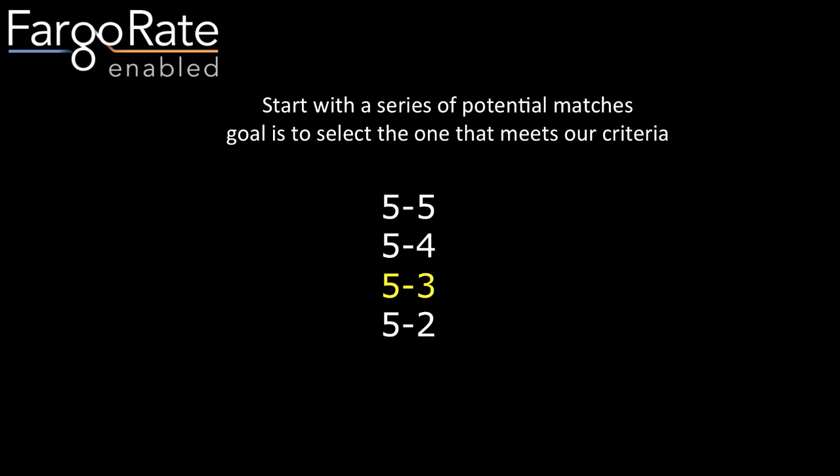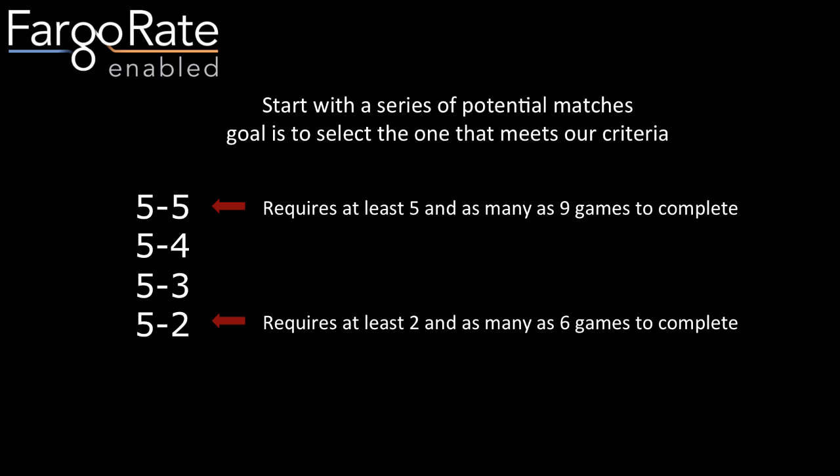Here's a way to look at the exercise we just went through. We started with a series of potential match-ups: five-to-five, five-to-four, five-to-three, and five-to-two, and our goal is to select the one that meets our criteria. In a tournament, a five-to-five requires at least five games and as many as nine games to complete. If a game takes ten minutes, that's between 50 and 90 minutes. Compare that to the five-to-two match-up, which requires at least two games and at most six — between 20 and 60 minutes. There's a mismatch here.